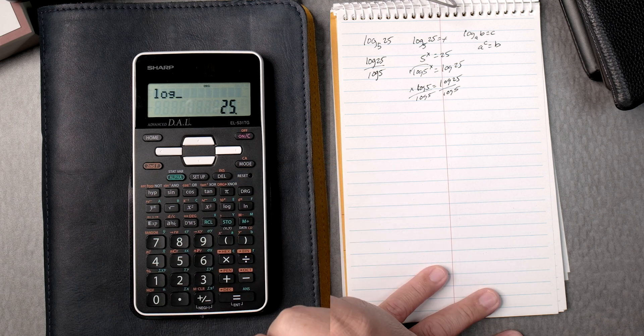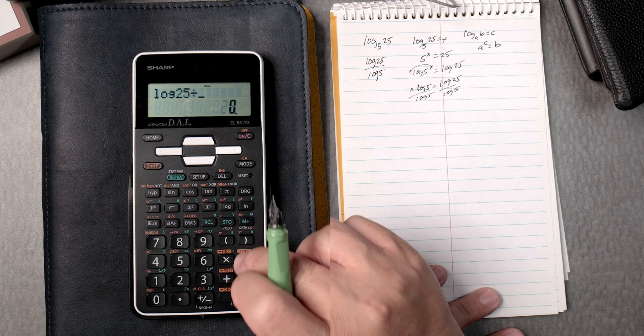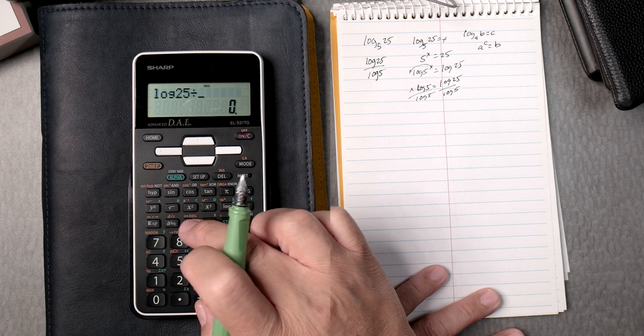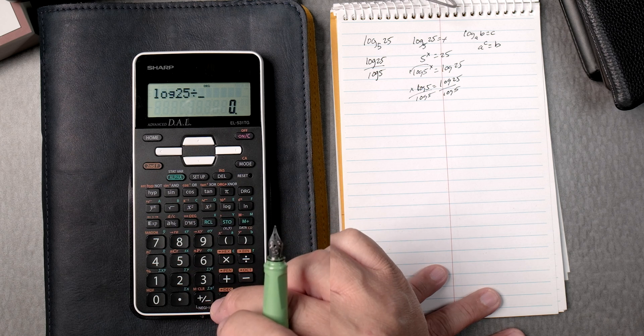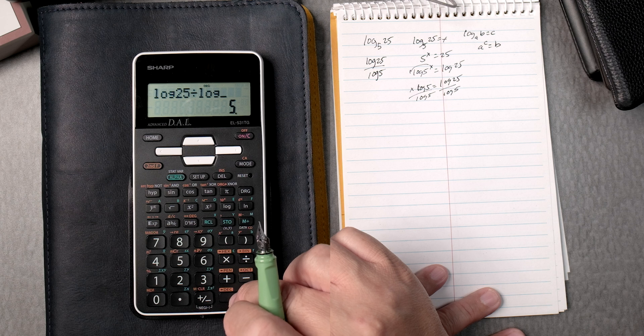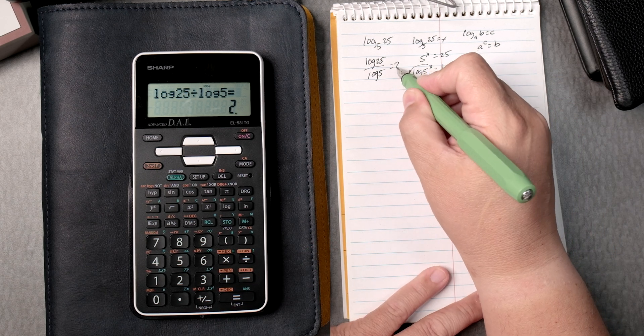25, right? I'm not sure if this is gonna work, but let's see. If I say divide, it did, it did do it. Divide by the log of 5, and then you press equals, it gives you 2. See that? And the answer is 2.